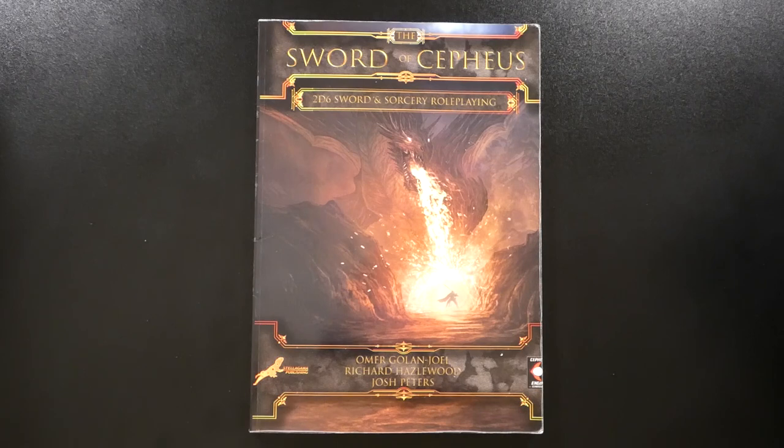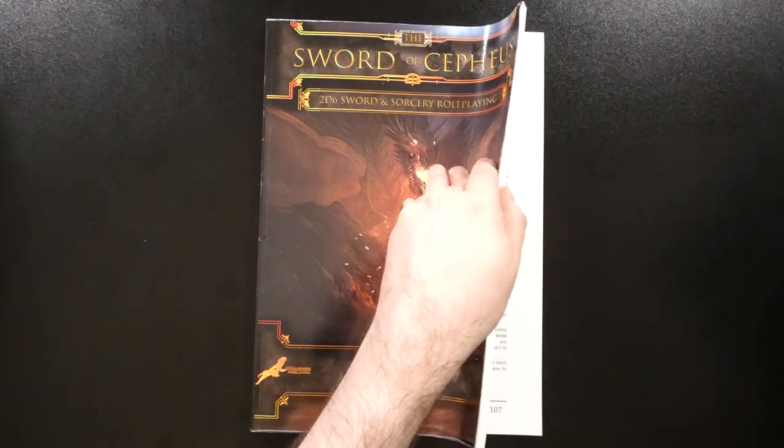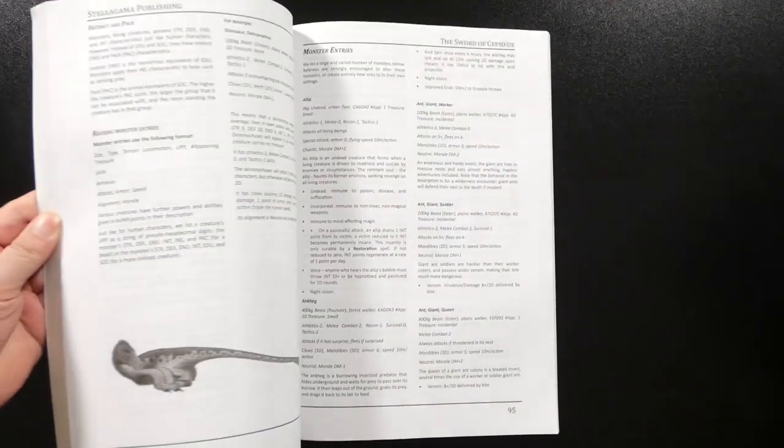Written by Omer Golan Jol, Richard Hazelwood, and Josh Peters, Sword of Cepheus, as I mentioned, is an adaptation of the Cepheus Engine to sword and sorcery roleplaying, and appears to be meant to evoke an old school feel. Clocking in at around 140 pages with a full color front cover and black and white interior, it is available as a perfect bound print on demand soft cover, as well as a PDF.